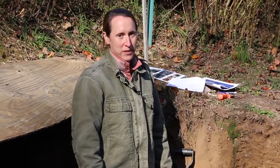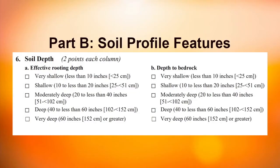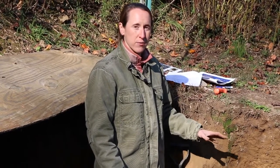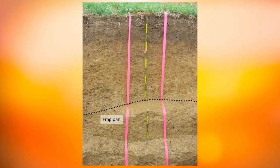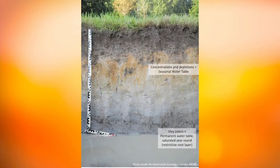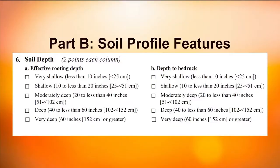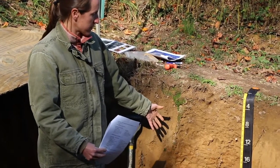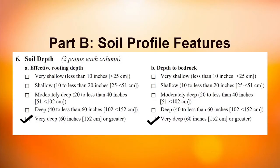Question six looks at effective soil depth — how deeply could roots go into the soil. We're not looking at how deep roots actually go, but whether anything would restrict them below a certain depth. Restricting features include a fragipan (a hard cemented layer restricting water and root movement), bedrock, or a permanent water table or saturation. In this soil we don't see anything restricting root growth, so we put that there's no restrictive feature within 60 inches — very deep. In Part B, we're looking specifically for bedrock depth; we don't see any in this profile, so bedrock is below 60 inches.